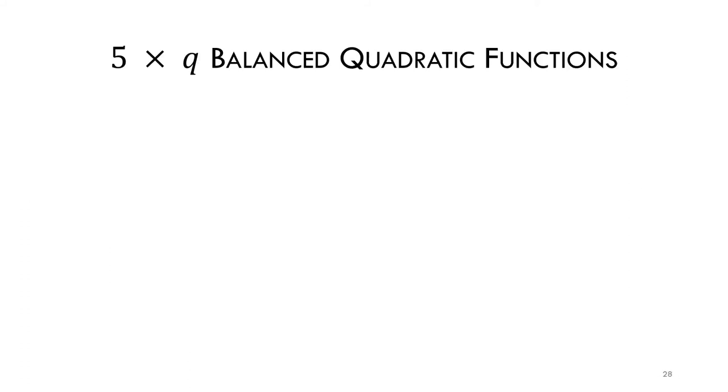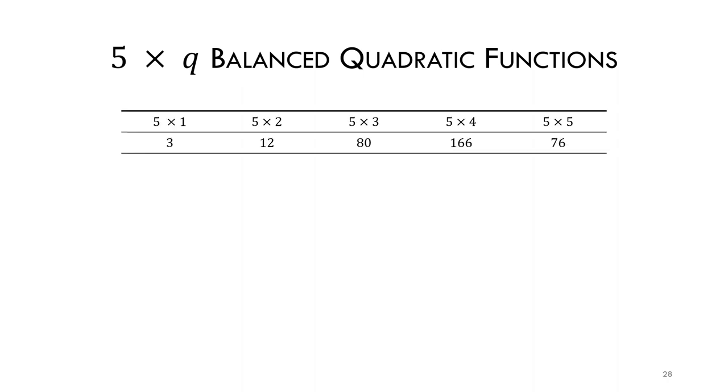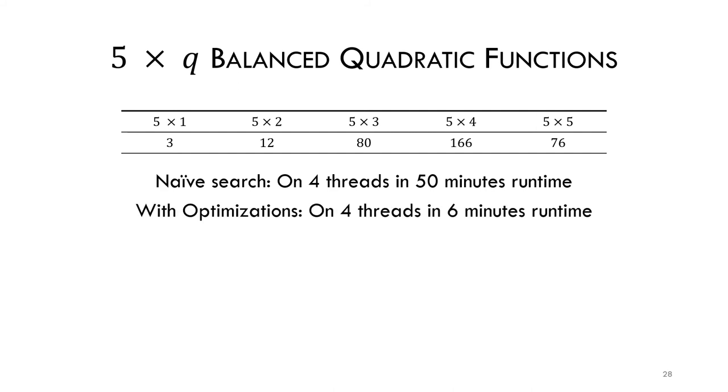We first applied this new methodology to the 5-bit quadratic Boolean functions. While the 76 5x5 functions had already been classified, this new algorithm provides also the representatives of the non-bijective 5-bit Boolean functions. A first version of the algorithm took us 50 minutes on 4 threads, which is already a big improvement over the previous work. But after some optimizations that we described in the paper, we were able to reduce this time to barely 6 minutes.